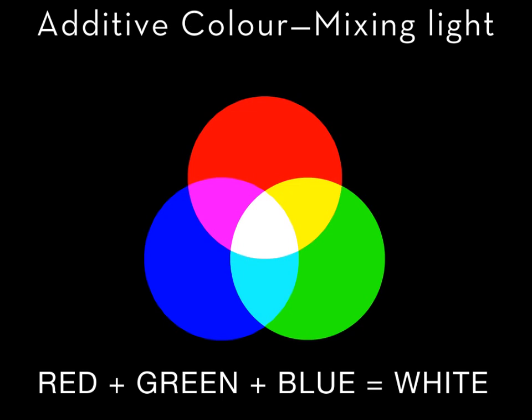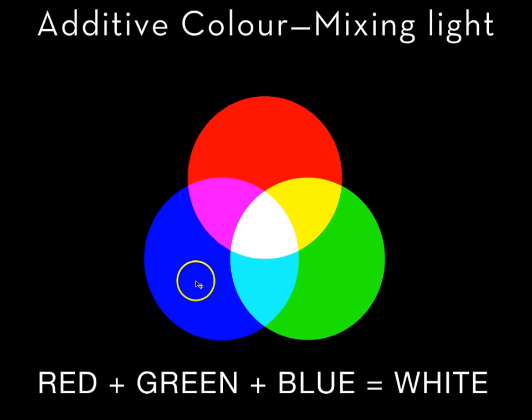Now we have seen the primary and secondary colors of light, I want to take a brief look at complementary colors. In the RGB color system — RGB color is another way of referring to additive color — the complementary color to any of the primaries is a secondary color. When I add together complementary colors I get white. Red has a complementary color cyan; when you add those two together you get white. When you add blue light and its complementary yellow light you get white. When you add green light to its complementary magenta light you get white.